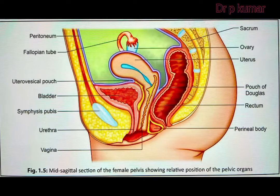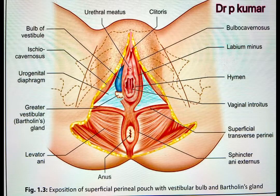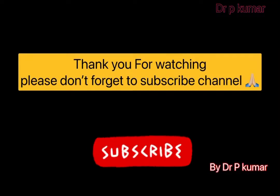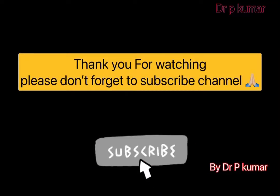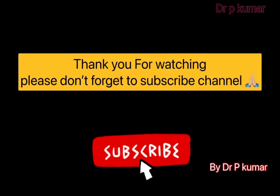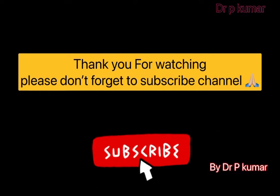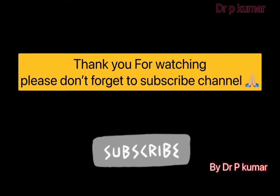This was internal genitalia — anatomy of vagina part 2 — in which we covered the cervix, uterus, ovary, fallopian tube, corpus luteum and pouch of Douglas. In the next video we will discuss puberty, menarche and menopause. Thank you.